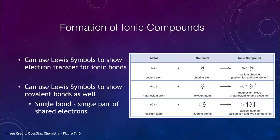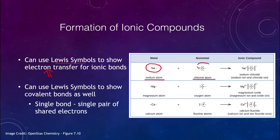Let's take a look at ionic compounds and how we can use Lewis symbols to show how they bind together. In an ionic compound, electrons are transferred from one atom to another. Here we have a sodium atom and a chlorine atom. Sodium has one electron in its outer shell; chlorine has seven. That electron is transferred from sodium to chlorine — noted here in a different color — giving us a sodium positive ion and a chlorine negative ion.